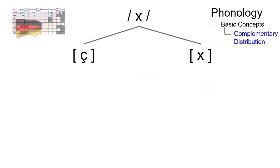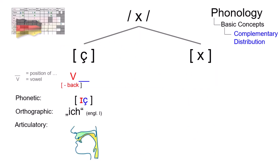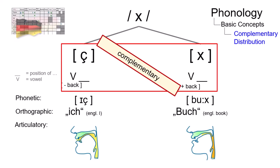Or take this German phoneme, where one member follows front vowels, as in ich, and one stands after back vowels, as in Buch, again a clear case of complementary distribution.